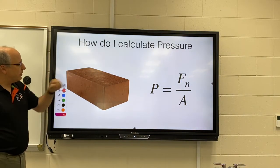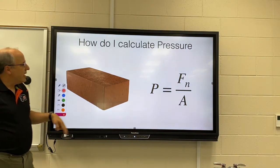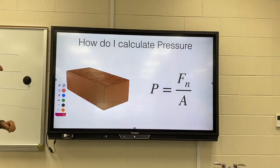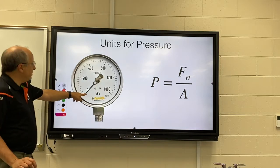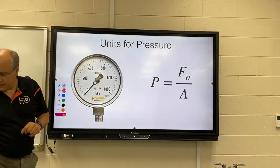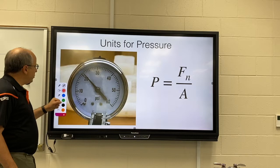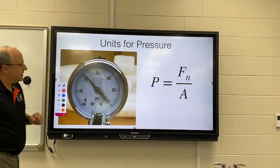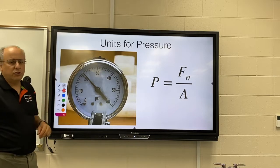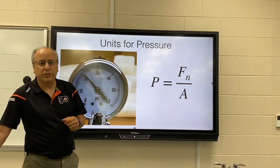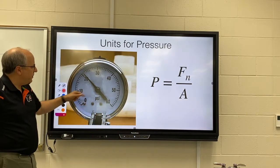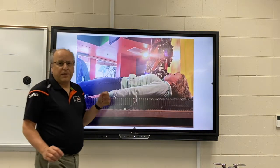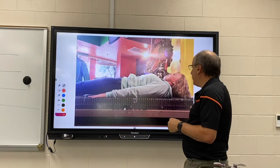To find pressure, you just divide the normal force by the area. The units come out in newtons per square meter, which is called the Pascal. Often you'll see them as kilopascals. Another unit you should get used to is PSI — pounds per square inch. That's not the standard unit, but it's commonly used in America, so be ready for PSI.